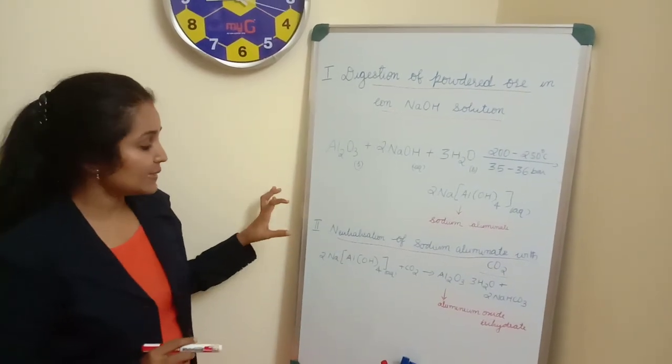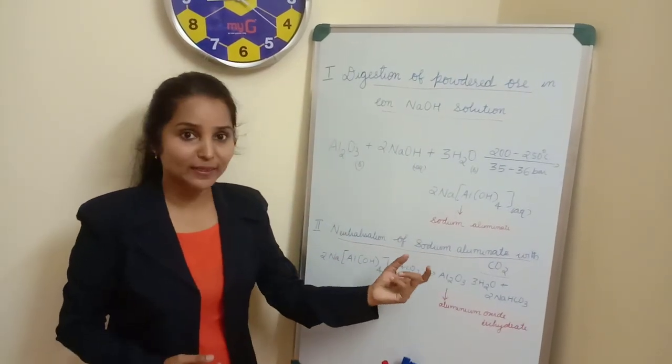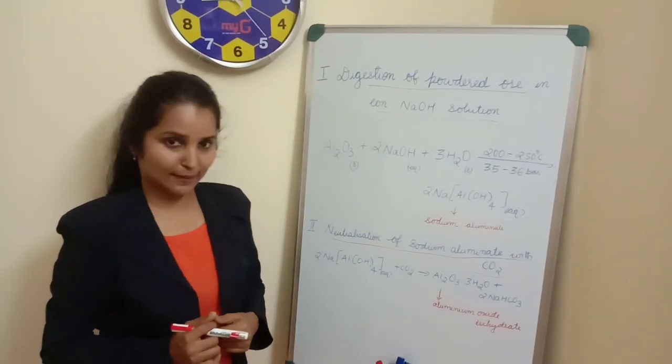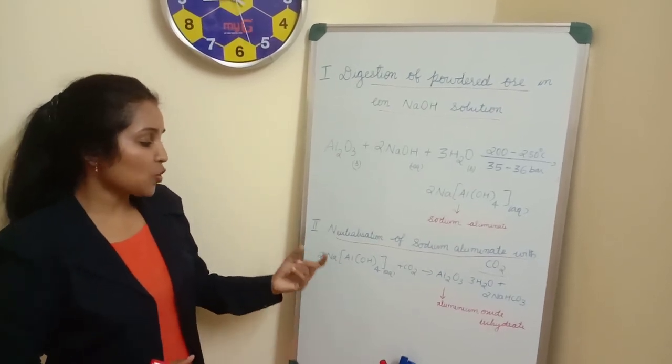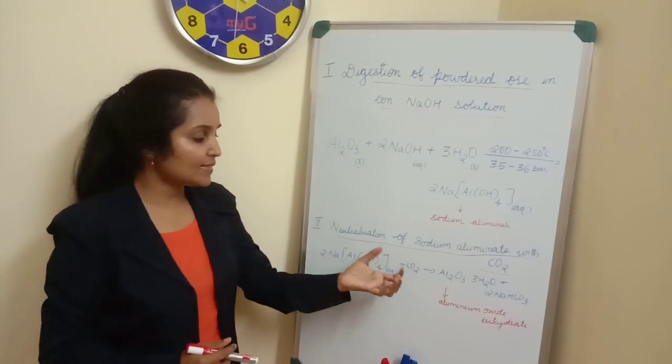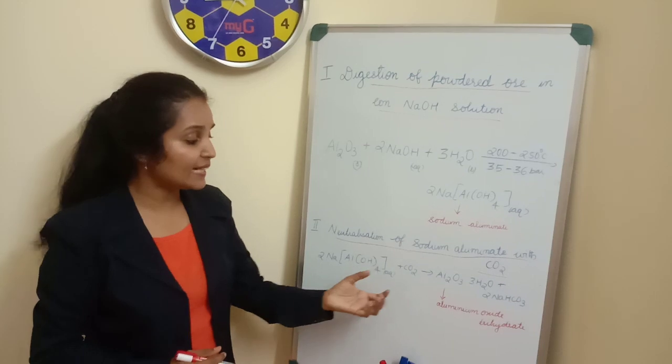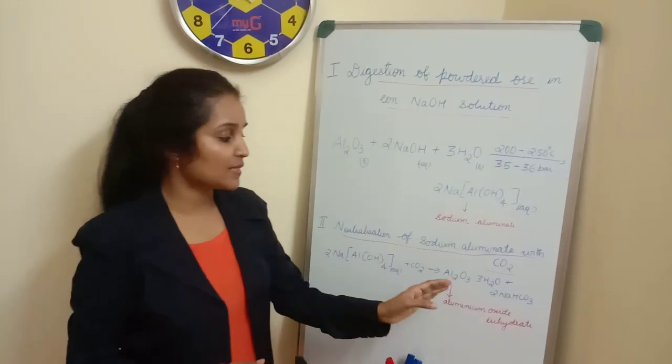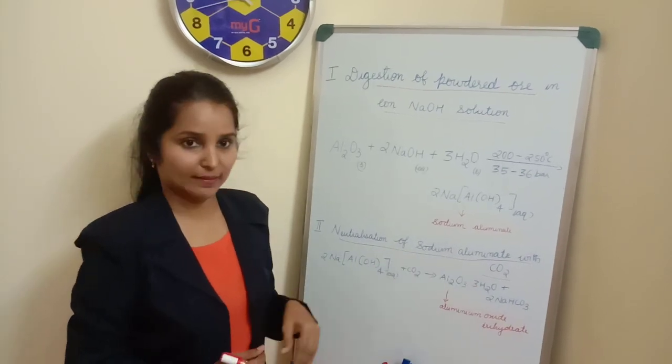The second step is neutralization of sodium aluminate with carbon dioxide. Since sodium aluminate is basic in nature, we treat it with an acidic substance that is carbon dioxide, and that neutralizes and forms a new product, that is aluminum oxide trihydrate.